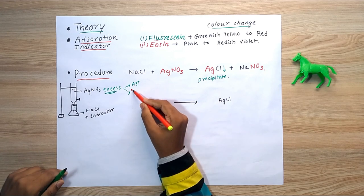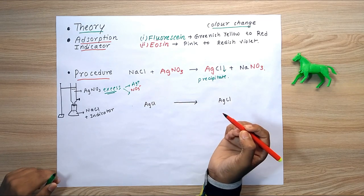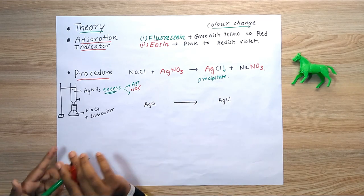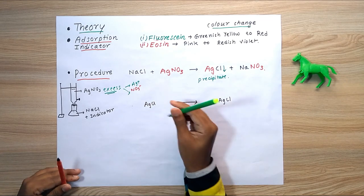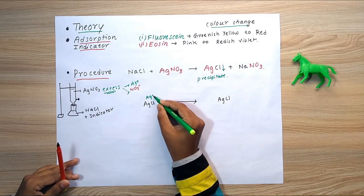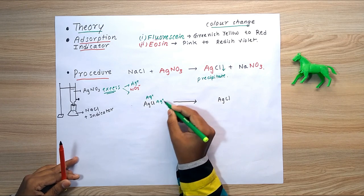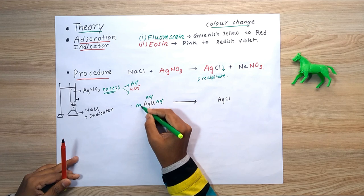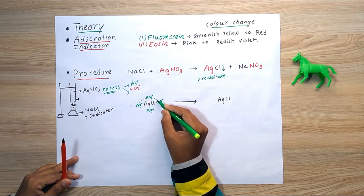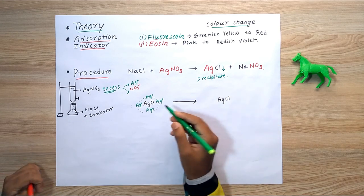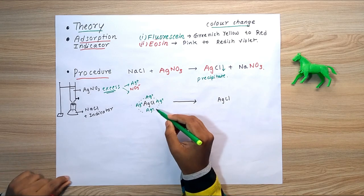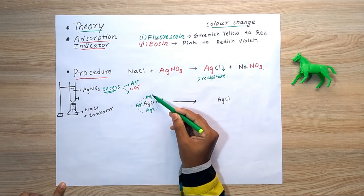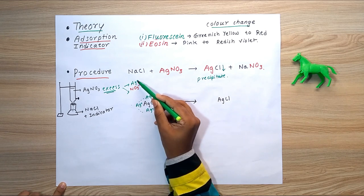The excess AgNO3 dissociates into Ag+ and NO3- ions. These ions adsorb on the surface of the precipitate. First, the Ag+ (silver ion) forms the primary layer — the silver ion adsorbs on the surface of the AgCl precipitate and forms the primary adsorption layer.